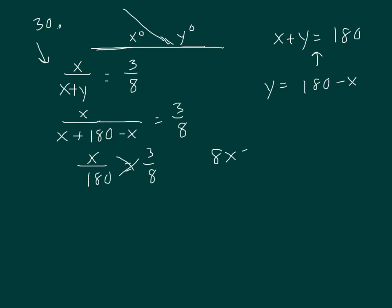Now let's cross multiply. That gives me 8x equals 3 times 180. 8x equals—3 times 8 is 24—540.